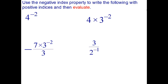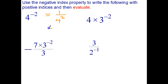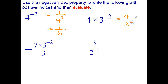On this page, we'd like you to first rewrite each expression with a positive index, and because these are numbers, evaluate it — which means turn it into an actual number. I'm going to do this whole page and you'll try a page on your own. 4 to the negative 2 is 1 over 4 to the positive 2 using our new index law. 4 to the power of 2 is 16, so that becomes 1 sixteenth. Next: 4 stays on top, 3 to the negative 2 becomes 3 to the positive 2 in the denominator, and 3 squared equals 9, so it's 4 over 9.